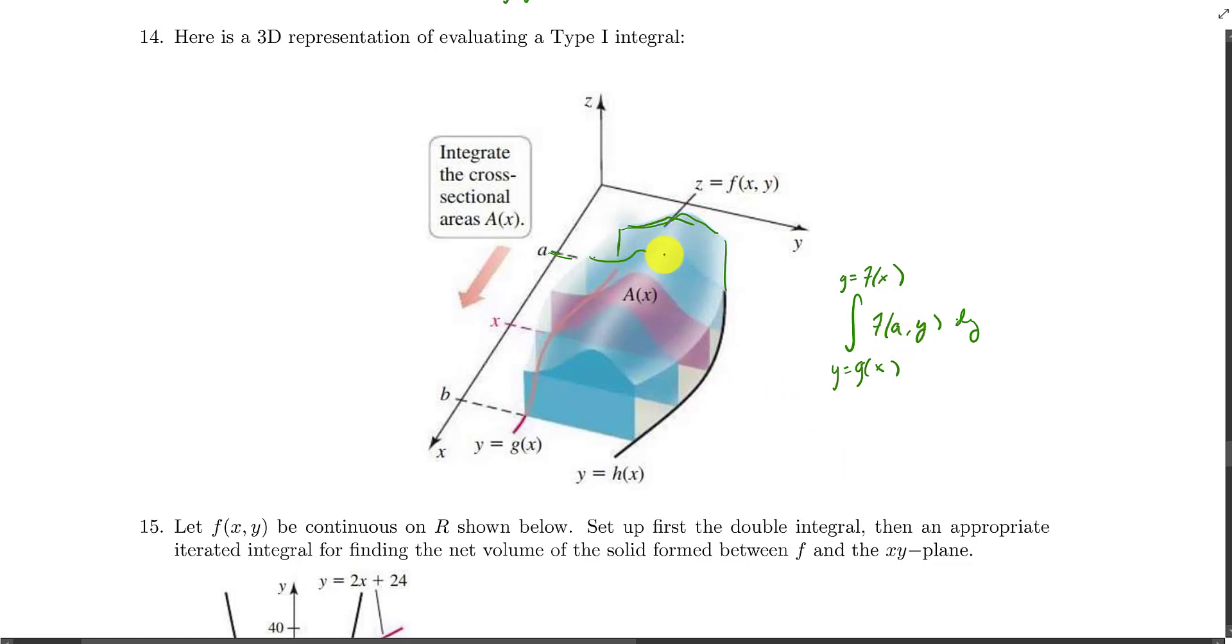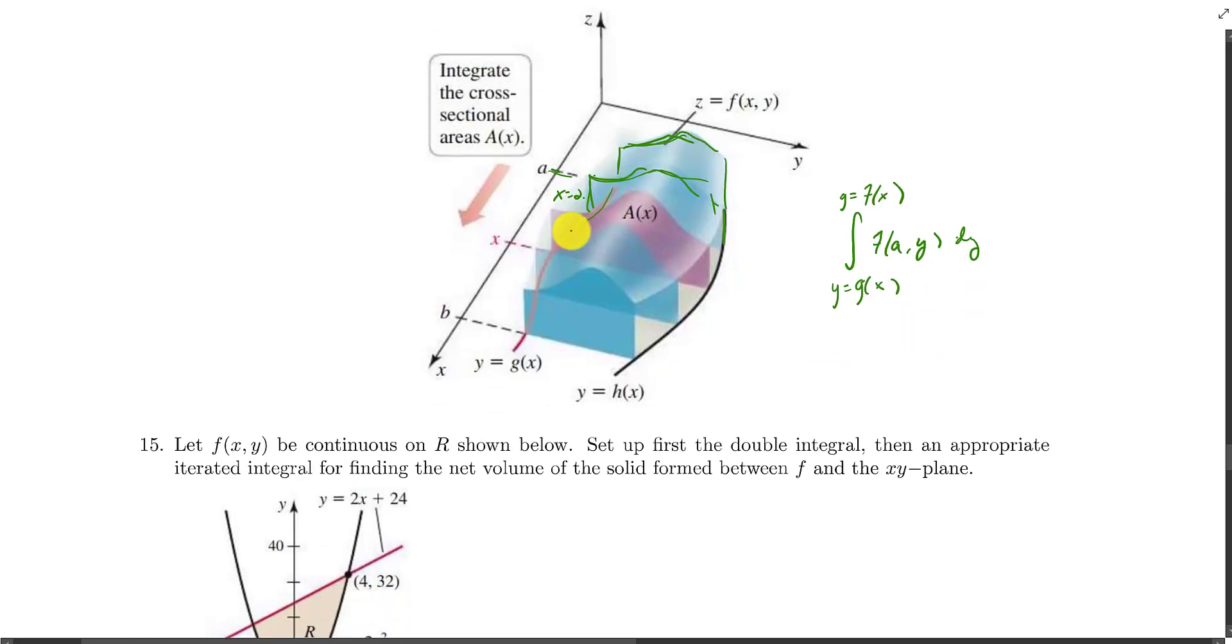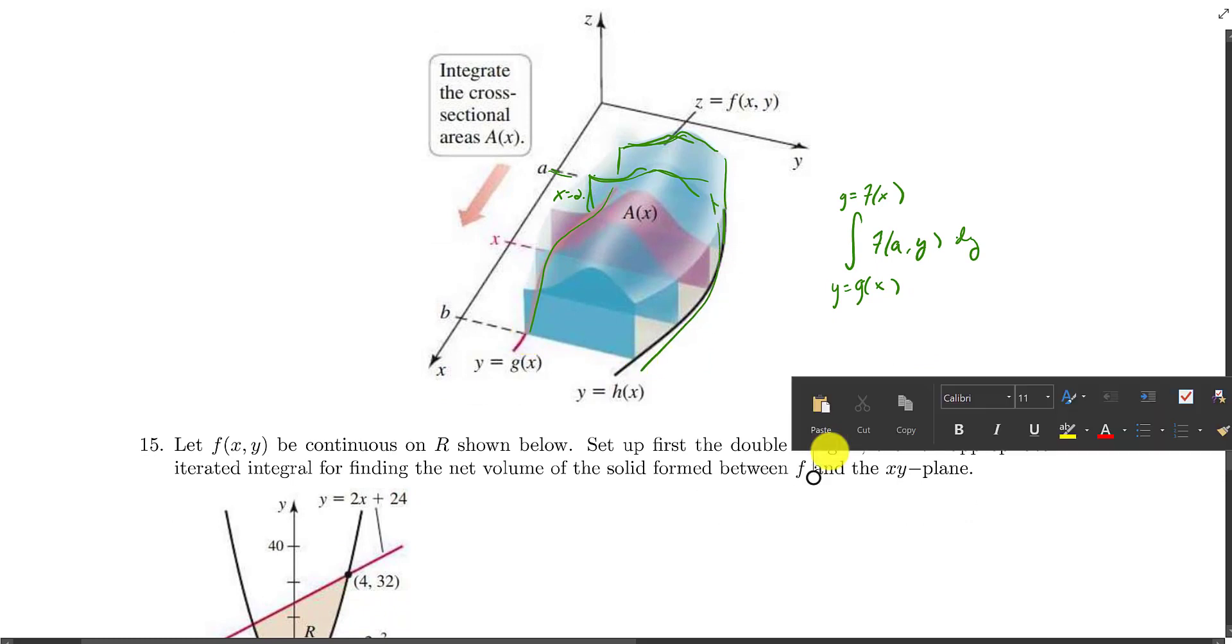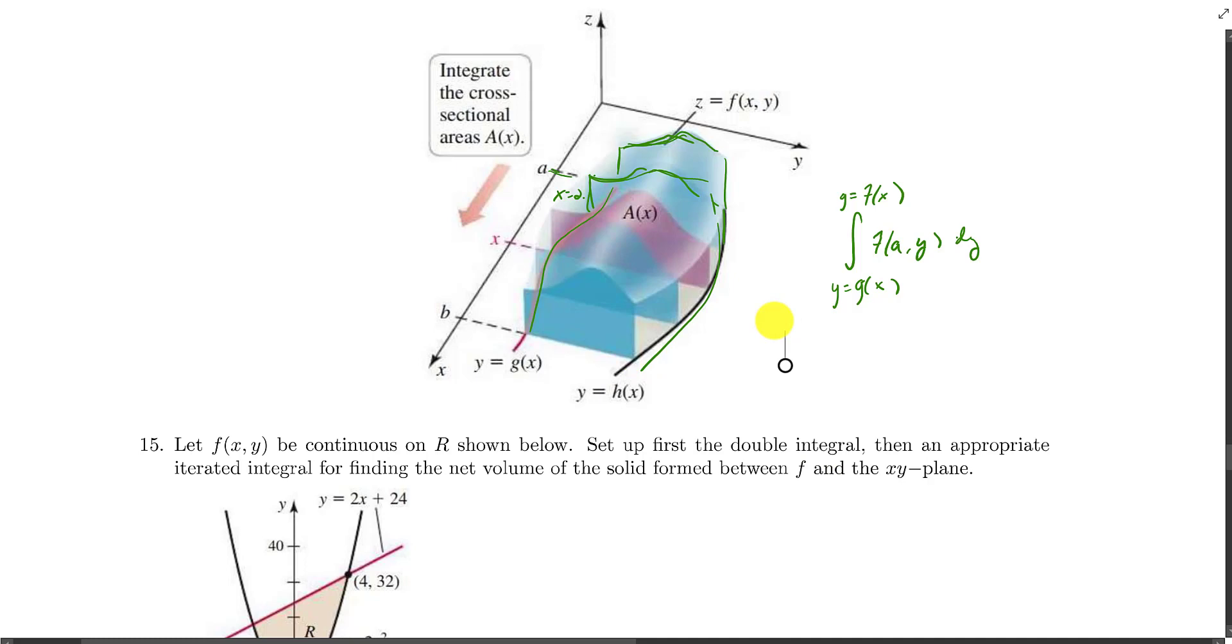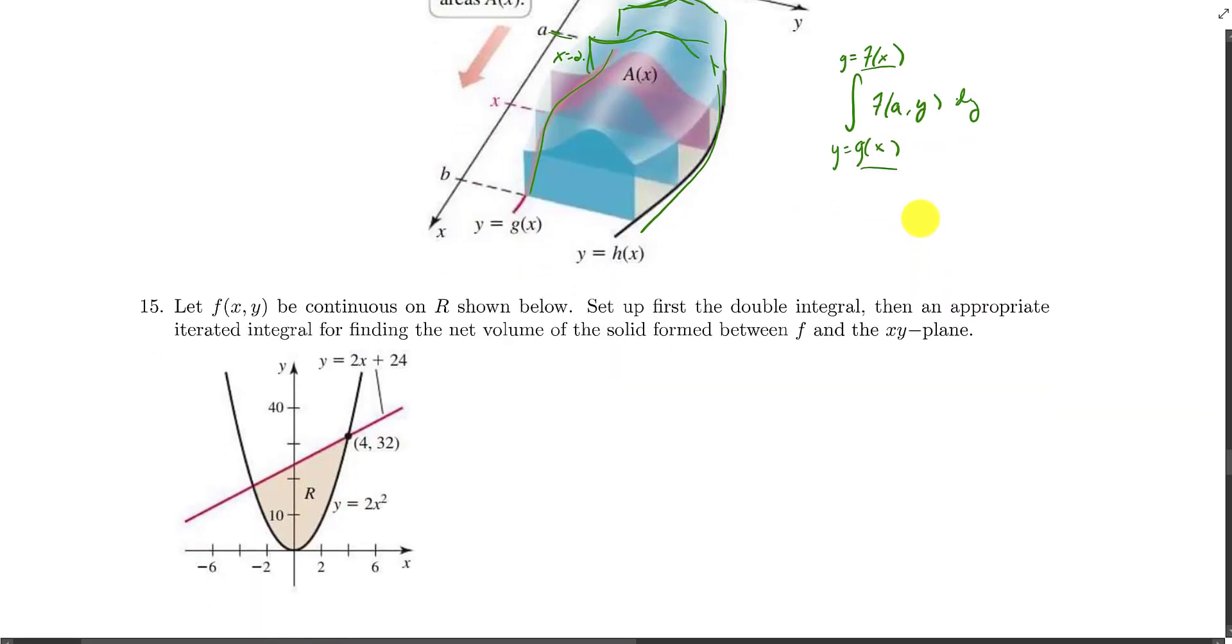But then what would we do? Well, we'd compute it then for some other x value. So maybe this is x equals 2 or something like that. We would add up this area to it as well. And then we're going to sum up a bunch of cross-sectional areas of this arbitrary thin width, and that's going to give us the volume here. But again, the key thing is that the upper and lower limits of integration here are not numbers like they were in our first iterated integrals, but they are curves where we think of y as a function of x.